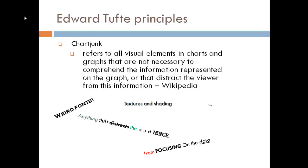So first, let's talk about chart junk. Wikipedia defines chart junk as all visual elements in charts and graphs that are not necessary to comprehend the information represented on the graph, or that distract the viewer from this information.